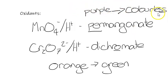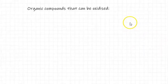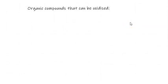So the observation that we see indicates that an oxidation reaction has or hasn't occurred. So there's just two organic compounds that can be oxidised from the organic compounds that we know.